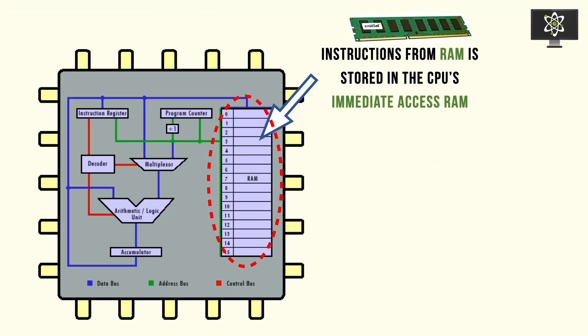The instructions from the RAM are now stored in the CPU's memory location known as immediate access RAM. It's another type of RAM that's different from the RAM it's getting instructions from.